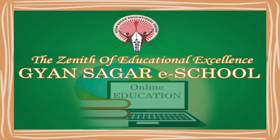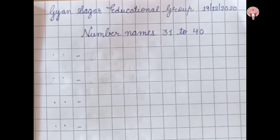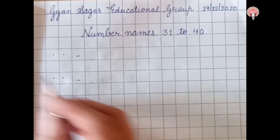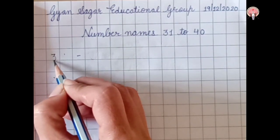Gyan Sagar Educational Group presents E-School. Hello children, today we are going to revise number names 31 to 40.